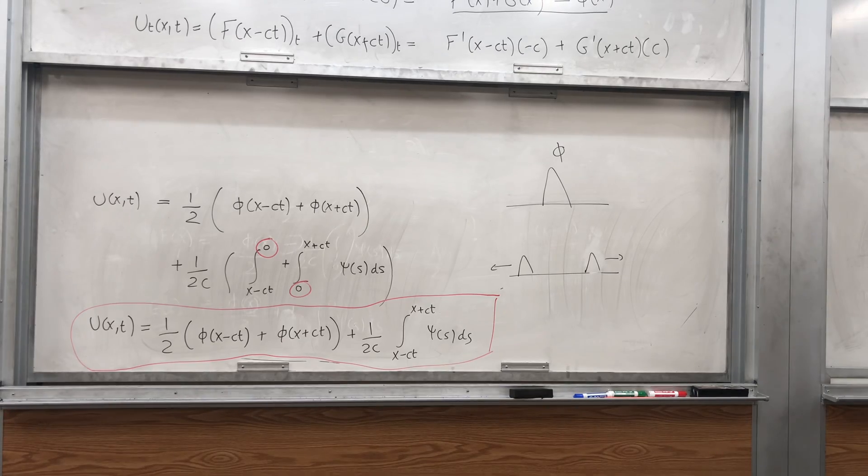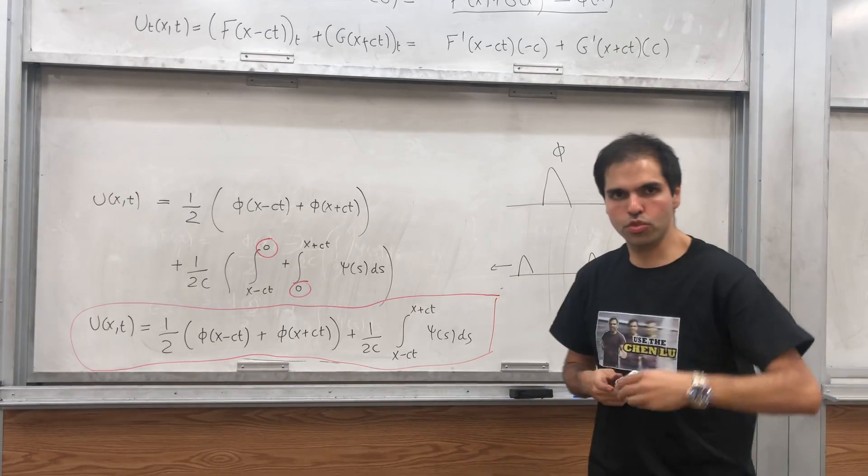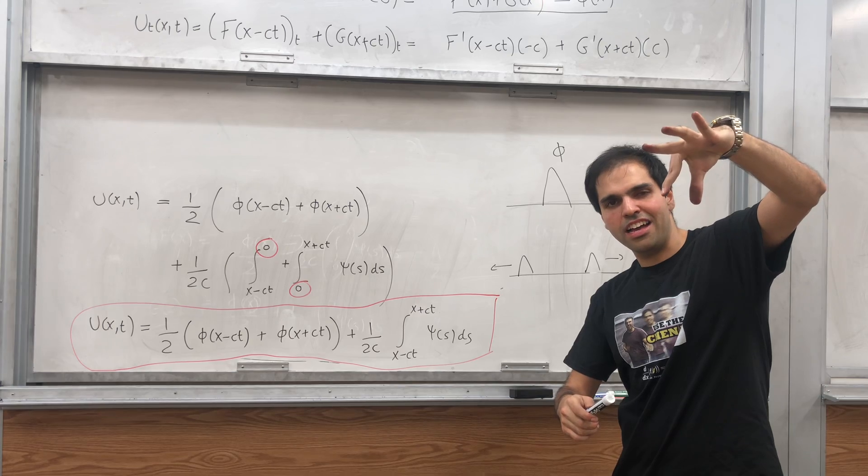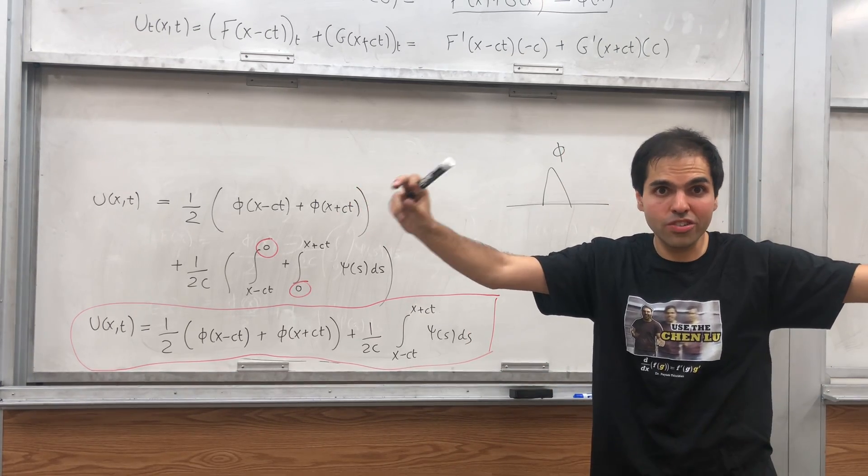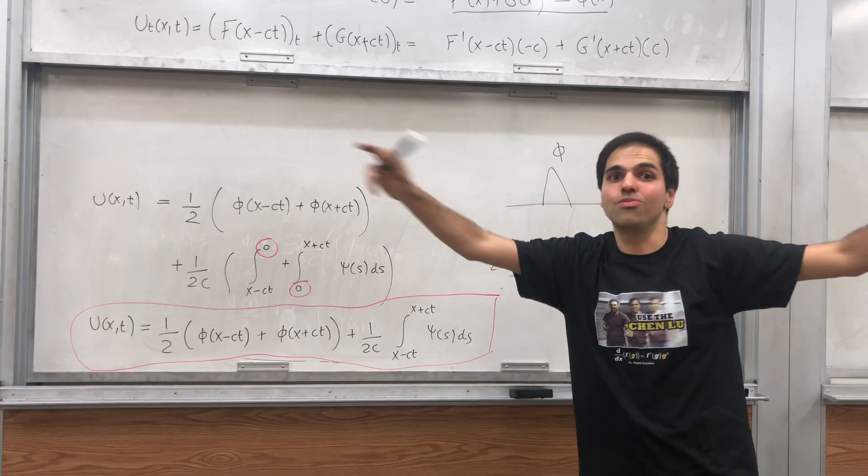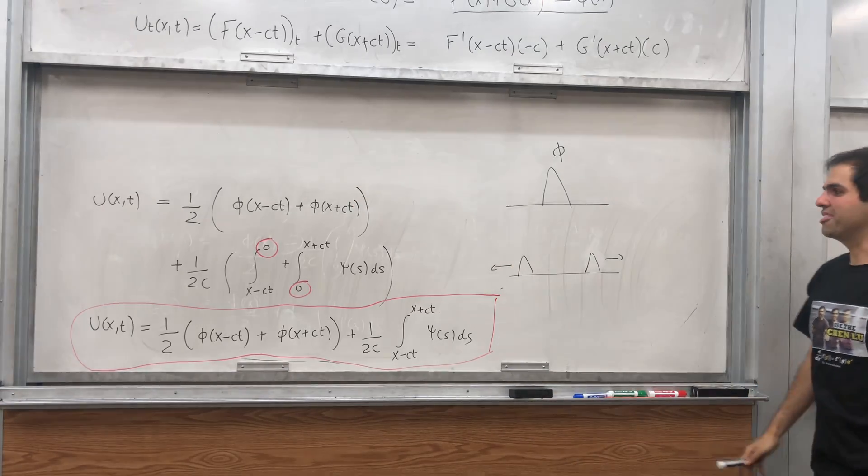Which is, again, sort of how a wave should work, right? If you have some string that looks like that, and you just unplug it, after a while, the spring should just ripple, and just one part goes to the right, the other one to the left.